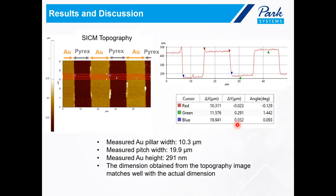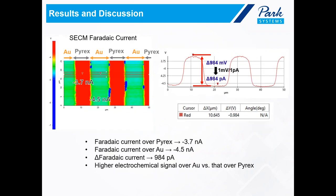Now let's move on to the Faraday current image. Over pyrex, the Faraday current is negative 3.7 nanoamps, while over gold, the Faraday current is negative 4.5 nanoamps. The delta Faraday current is about 984 picoamps. The correlation of the topography and Faraday current image reveals the expected contrast: enhanced Faraday current over conductive gold regions, consistent with positive feedback, and reduced Faraday current over insulated pyrex trenches, consistent with negative feedback as a result of hindered diffusion. In the Faraday current image, the color over gold appears green and over pyrex appears red, simply because the current is more negative over gold compared to pyrex.